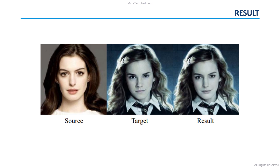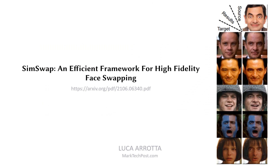Here you can see what we can obtain by using SIMSWAP to transfer the identity of a source image into a target image, while preserving the attributes of the target. So this was SIMSWAP, an efficient framework for high-fidelity face swapping. I hope you enjoyed this video — leave a like and see you in the next research paper summary by martechpost.com.